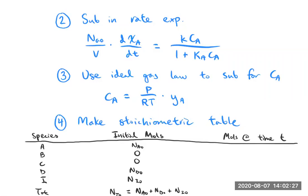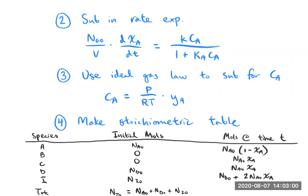Filling in moles at time t: A has N_A0·(1 − X_A). For B and C, from stoichiometry, each is N_A0·X_A. For D, it's N_D0 + 2·N_A0·X_A. The inert remains N_I0. Something interesting to note is that the total number of moles in the batch reactor equals the initial total plus 3·N_A0·X_A.